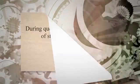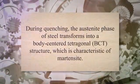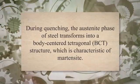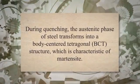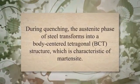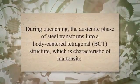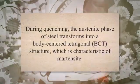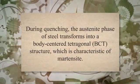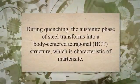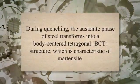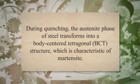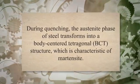The formation of martensite is a diffusionless process, meaning that there is no movement of atoms during the transformation. Instead, the transformation occurs through a rearrangement of the crystal lattice structure. During quenching, the austenite phase of steel transforms into a body-centered tetragonal (BCT) structure, which is characteristic of martensite.